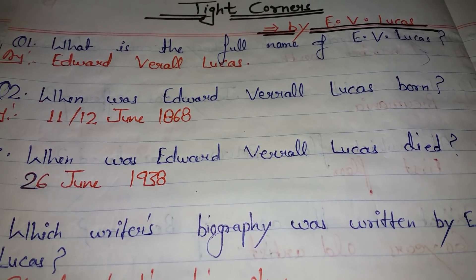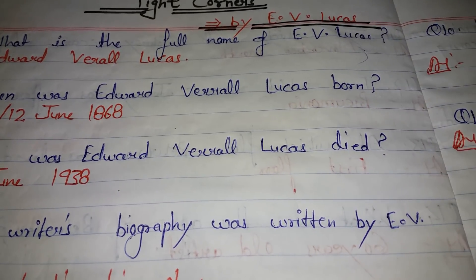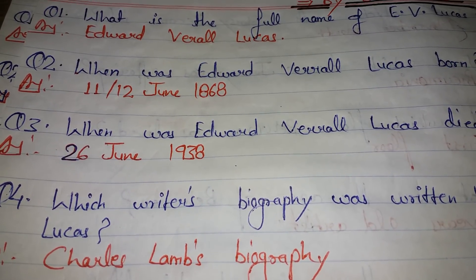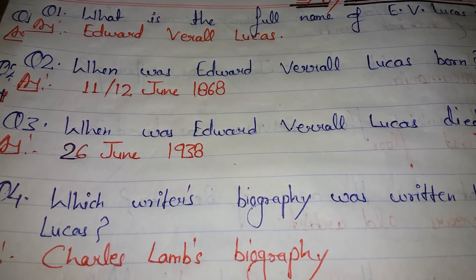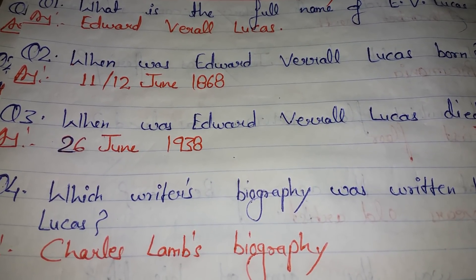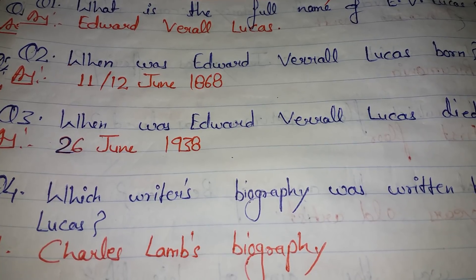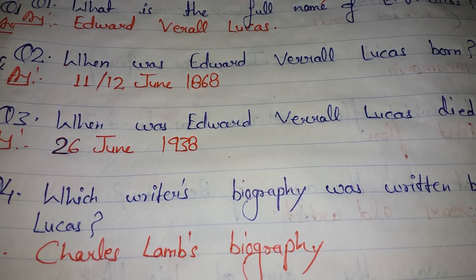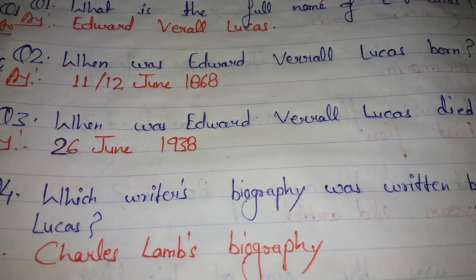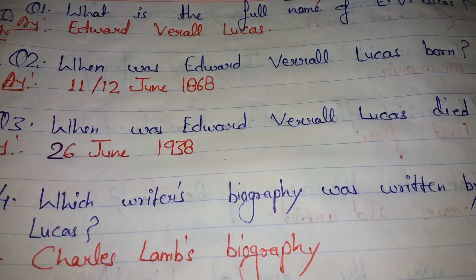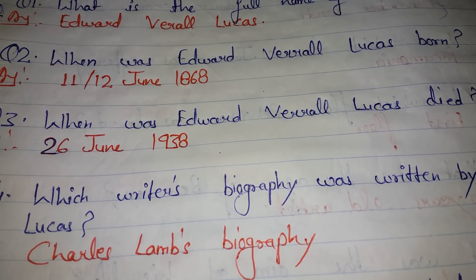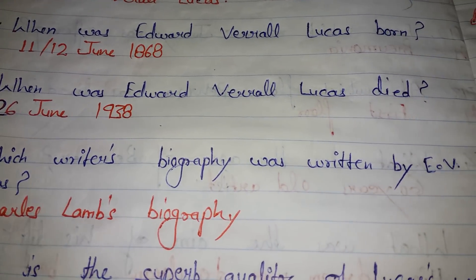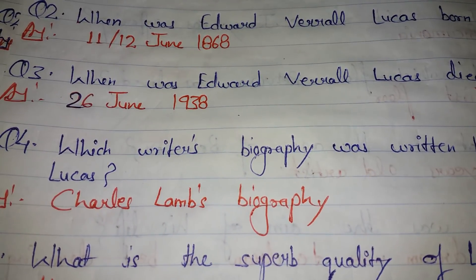When was Edward Verrall Lucas died? He died on 26th June 1938. Next question: which writer's biography was written by E.V. Lucas?